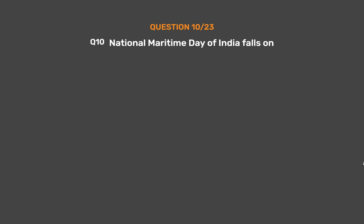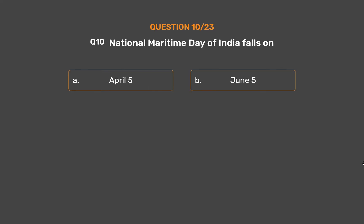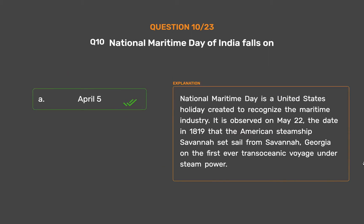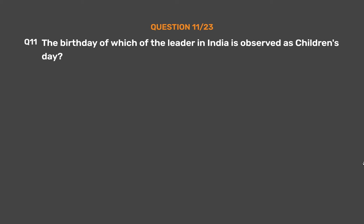Question No. 10. National Maritime Day of India falls on: Option A, April 5th; Option B, June 5th; Option C, October 5th; Option D. The correct answer is Option A, April 5th. National Maritime Day is a holiday created to recognize the maritime industry. It is observed on May 22nd, the date in 1819 that the American steamship Savannah set sail from Savannah, Georgia on the first-ever trans-oceanic voyage under steam power.